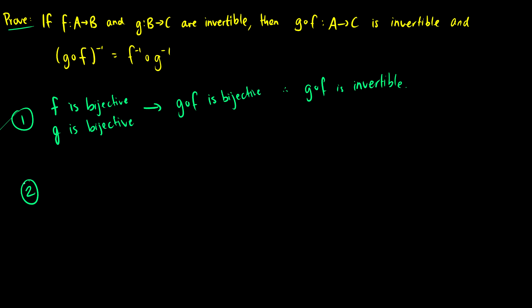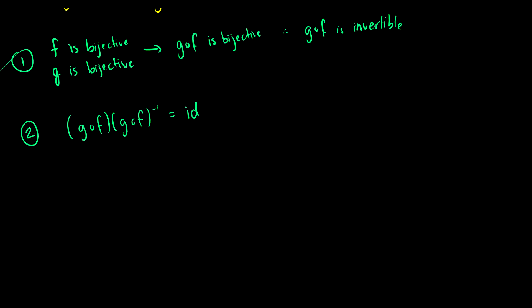Part two, we need to show that the inverse of g∘f is equal to f⁻¹∘g⁻¹. So what we can do is we know that if we take g∘f and g∘f inverse, we're going to get the identity function back. So we're going to take g∘f and test f⁻¹∘g⁻¹ in its place and see if we get the identity function back.